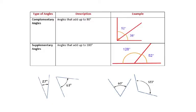Before we get started with figuring out unknown angles, let's talk about what complementary and supplementary angles are. Complementary angles are angles that add up to 90 degrees. In this example, we have a 52 degree angle and a 38 degree angle. If I were to add the 52 and the 38, those add up to 90 degrees.